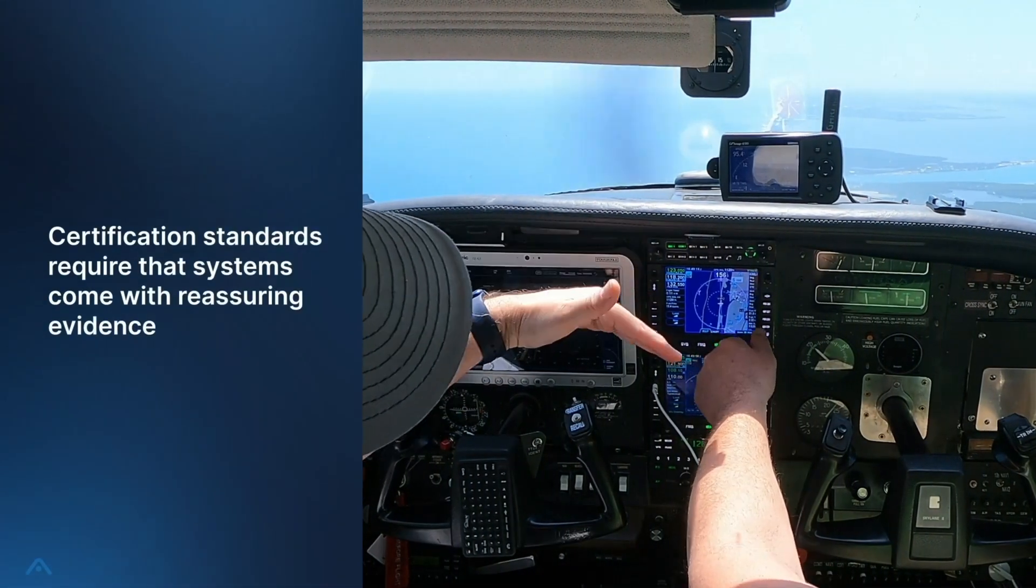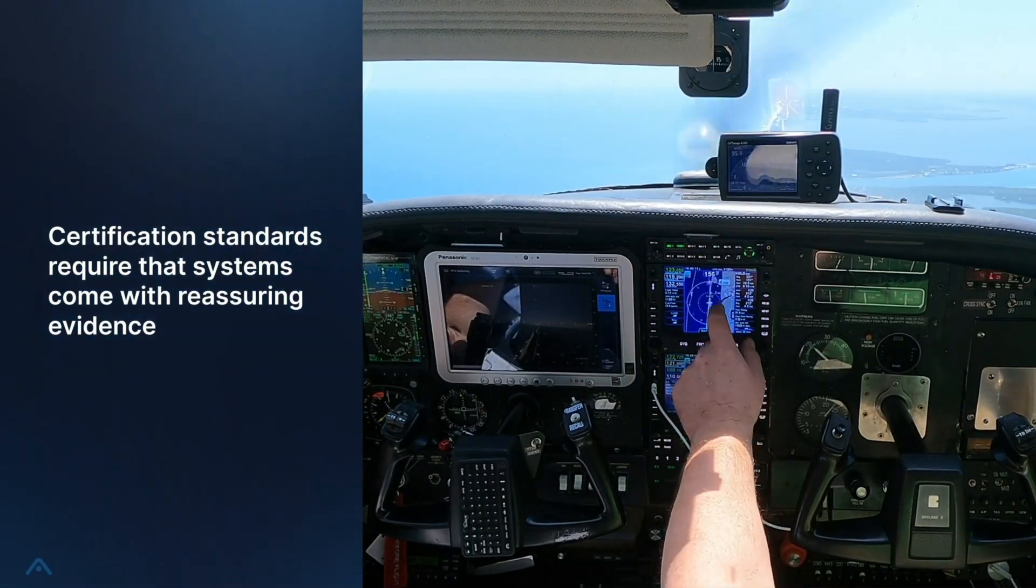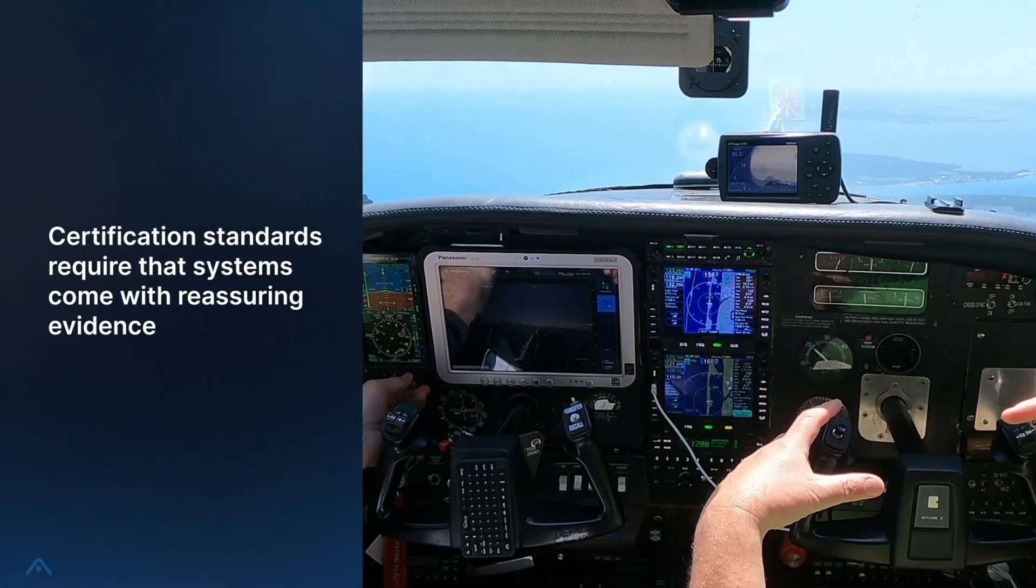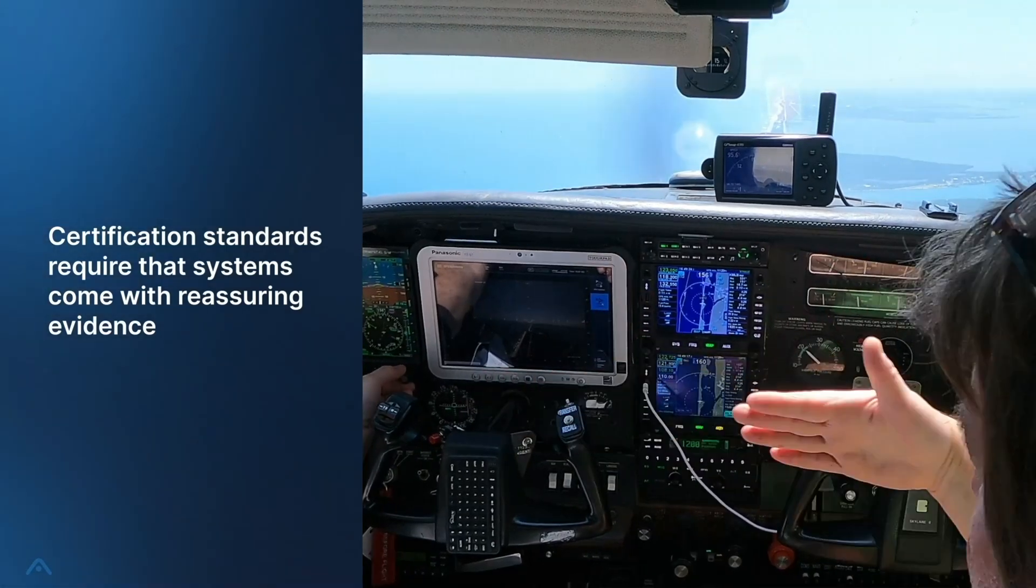Explanations on how and why things work are aimed to assure that they work as intended. This assurance is a large part of certification for automated systems that are safety critical.